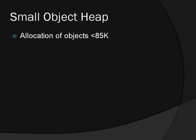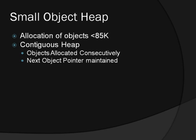.NET adds objects of less than 85k to the small object heap. It's a contiguous heap, in that all the objects are allocated sequentially, and .NET maintains a pointer called the NextObjectPointer that indicates where the next object in the sequence should be allocated. As well as allocating objects, .NET will also keep track of objects that are no longer used.